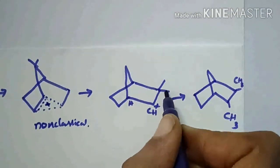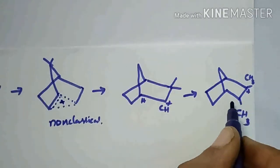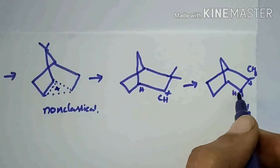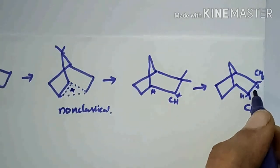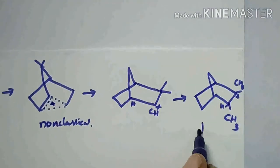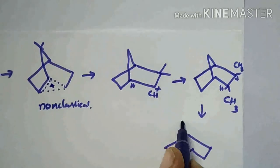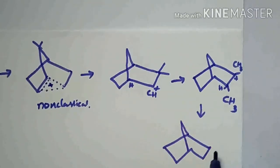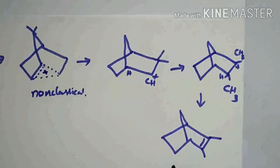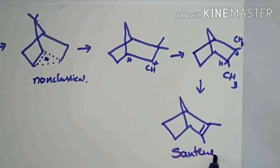So this CH3 is migrated here, and it will form a positive charge here. Here one hydrogen is there — this hydrogen will be deprotonated and it will form a double bond here. It is santene — it is the final product.